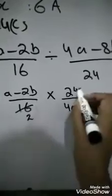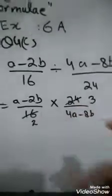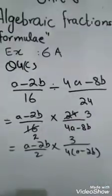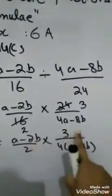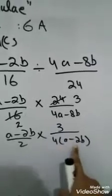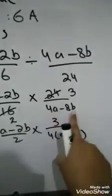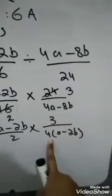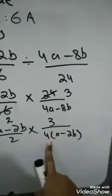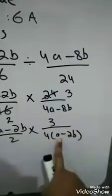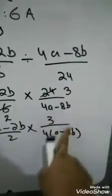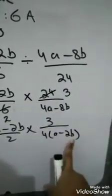One division could be made. 2 times 8 is 16. 3 times 8 is 24. Okay students. A minus 2b over 2 into 3 over 4 into a minus 2b. This is 4a minus 8b. We have extracted the common factor 4 from this denominator. 4 into a minus 2b. 4 times 2 is 8. So a minus 2b would be there.